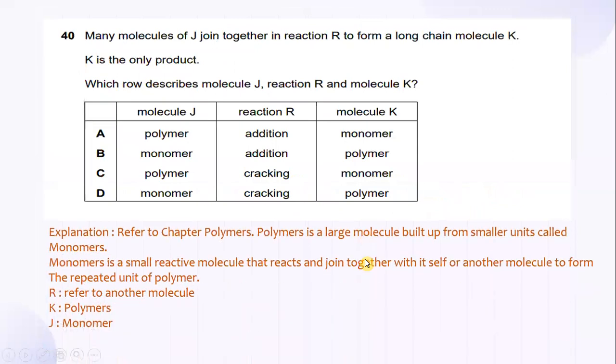And number 40, many molecules of J join together in a reaction R to form a long-chain molecule K. So, K is the only product which will describe molecule J, reaction R, and molecule K. Explanation refers to chapter polymers. So, by definition, polymers is a large molecule built up from smaller units called monomers. Monomers is a small reactive molecule that reacts and joins together with itself or another molecule to form the repeated unit of polymer.